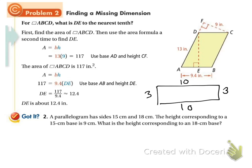So we're going to do our got it problem here. It has sides of 15 and 18, and this is not at all to scale, but 15 and 18. And it says the height corresponding to the 15 centimeter base is 9. So this here is 9. So this base and this height go together because they have the right angle there. This one and this one. They go together.